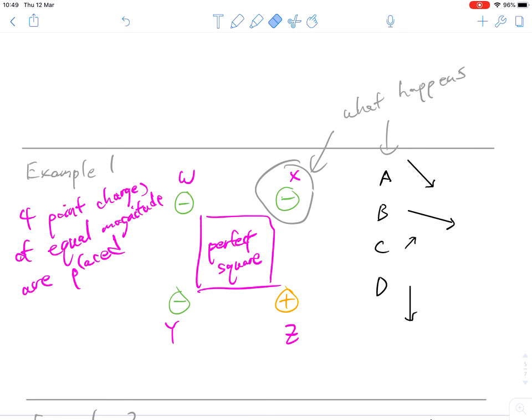Welcome back, guys. So hopefully you've had a chance to make your own hypothesis about what would happen. So the best way to approach this is to draw some vectors. So the reason I labeled it is because it's going to make it a little bit easier to talk about. So X and Y are going to repel each other, like that. And I'm going to write that's due to W on X. Y is also going to repel it as well.